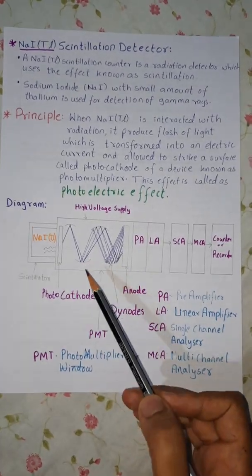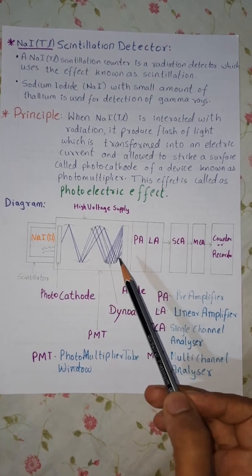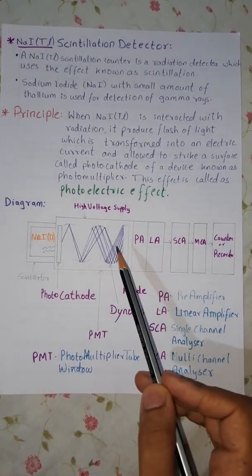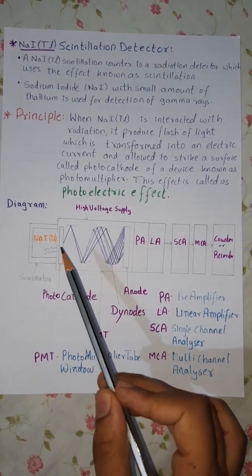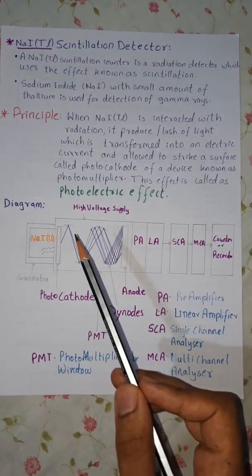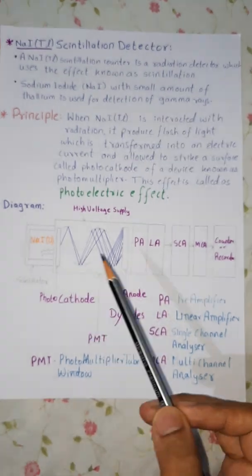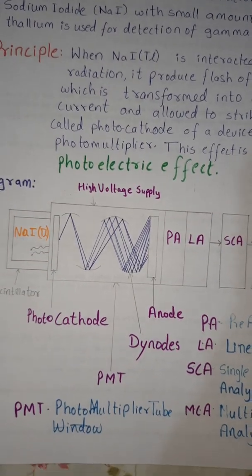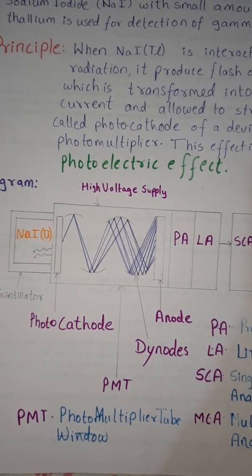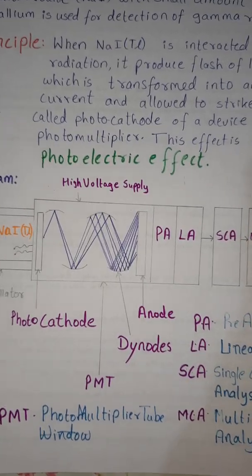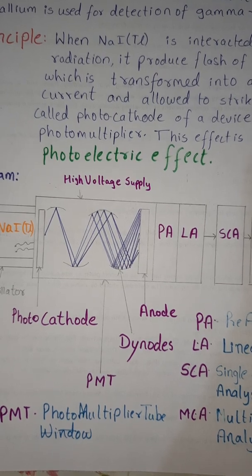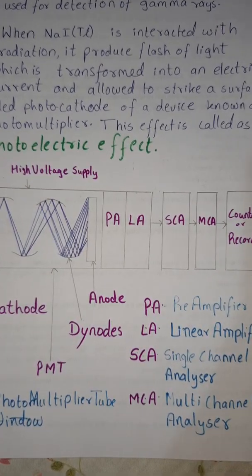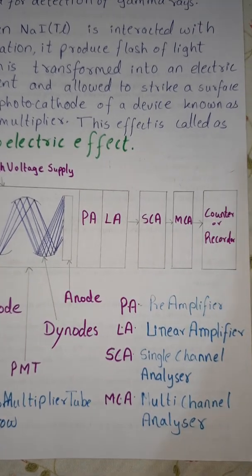This is then transferred to the PMT that is photomultiplier tube. Here there are various dinodes. These excited electrons multiply at subsequent level in the dinode as they have very high potential level at every stage. From here they are connected at the anode and from anode they are sent to the PA and LA which is pre-amplifier and linear amplifier.